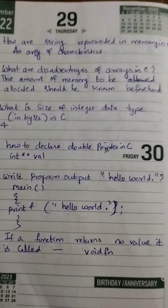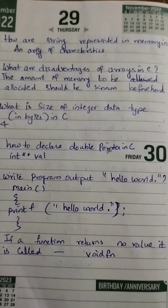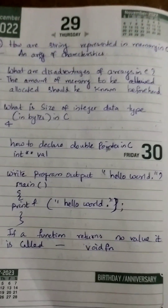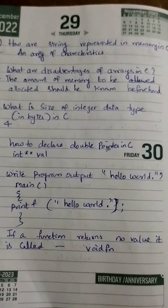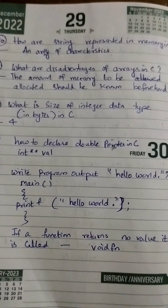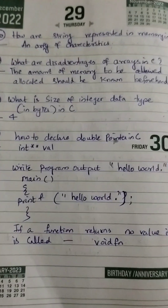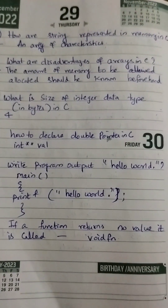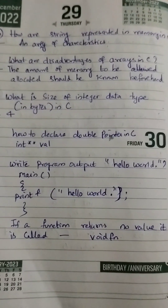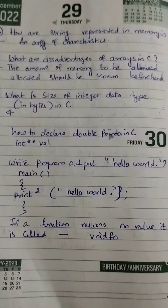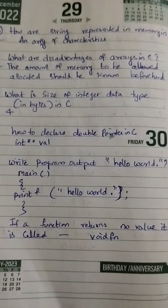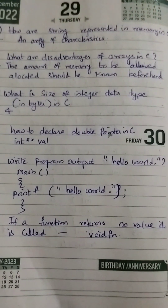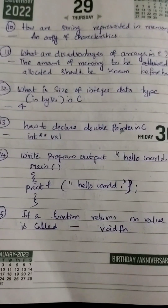'How are strings represented in memory in C?' — as an array of characters. 'What are the disadvantages of arrays in C?' — the amount of memory to be allocated should be known beforehand. 'What is the size of the integer data type in bytes in C?' — the answer is 4 bytes.